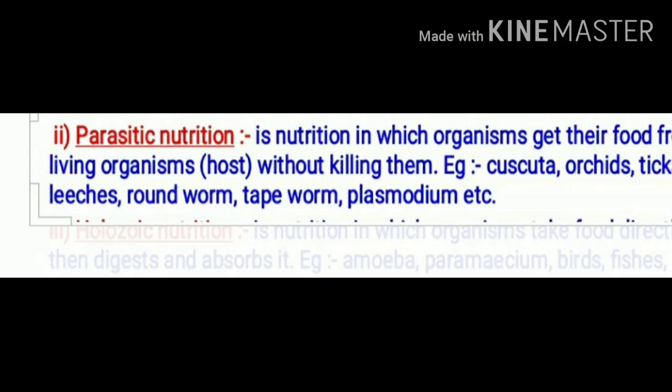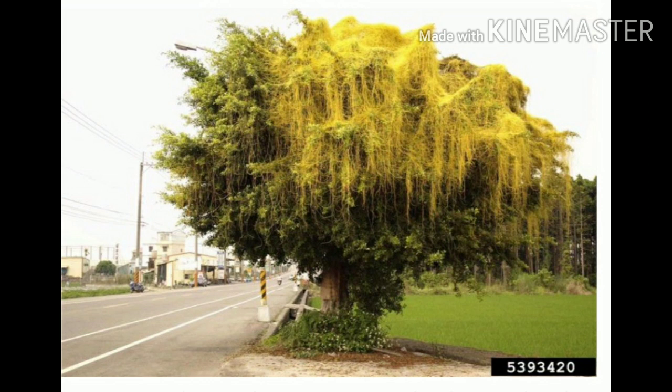The second type of heterotrophic nutrition is parasitic nutrition. It is the nutrition in which organisms get their food from living hosts without killing them. They take nutrients from their hosts but they don't kill them — they harm them definitely, but they don't kill them. Examples include leeches, lice, ticks, mosquito, tapeworm, and roundworm. There is also a parasitic plant called cuscuta, known as amarbel. These are all examples of parasites which neither prepare their own food nor take it from dead matter, but live on a host and take nutrients from it.